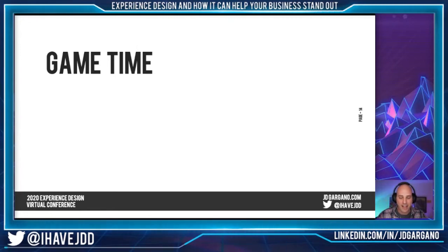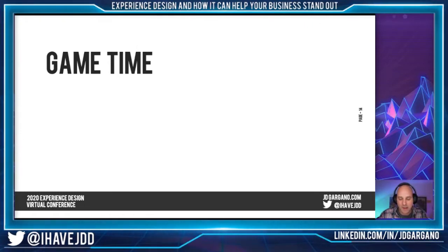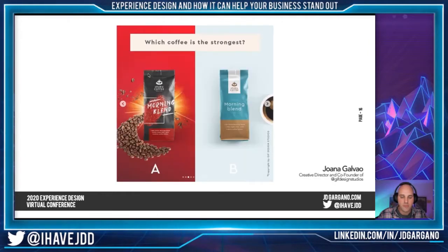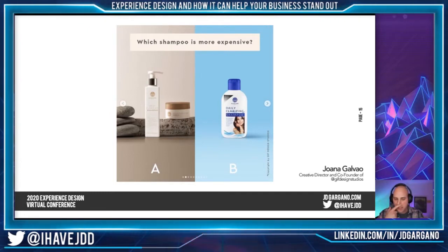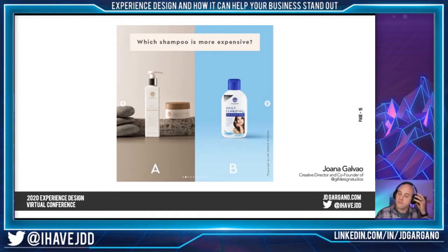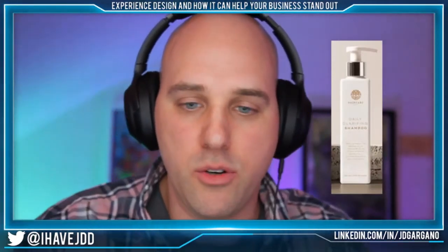Game time — we're going to play a little game here. I want everybody to put some answers in the chat. It's going to be an A or B. I want you to look at this product — tell me, which shampoo was more expensive, A or B? We got A. Which coffee is the strongest, A or B? Coffee A — that's right. Which cookie brand has the healthiest ingredients? B. Of course, B. Healthiest ingredients for sure.